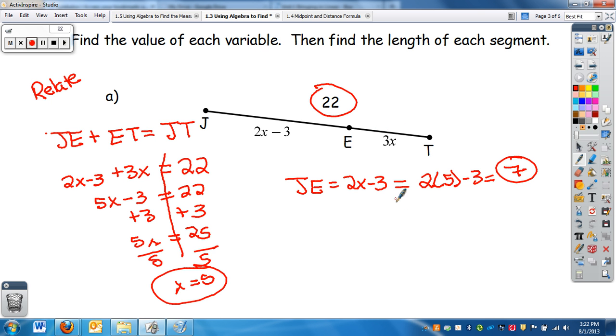Now to get ET, I have two options. I can, since I know this is 7, I can go 22 minus 7 to get this length to be 15. Or I can do what I did for JE and go ET, which equals 3X, and 3 times 5 equals 15.